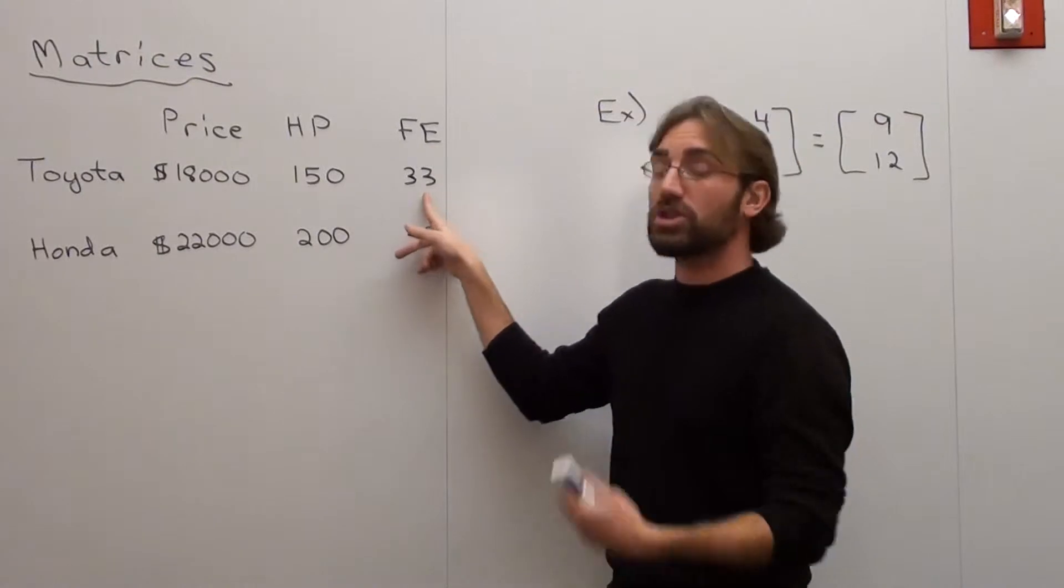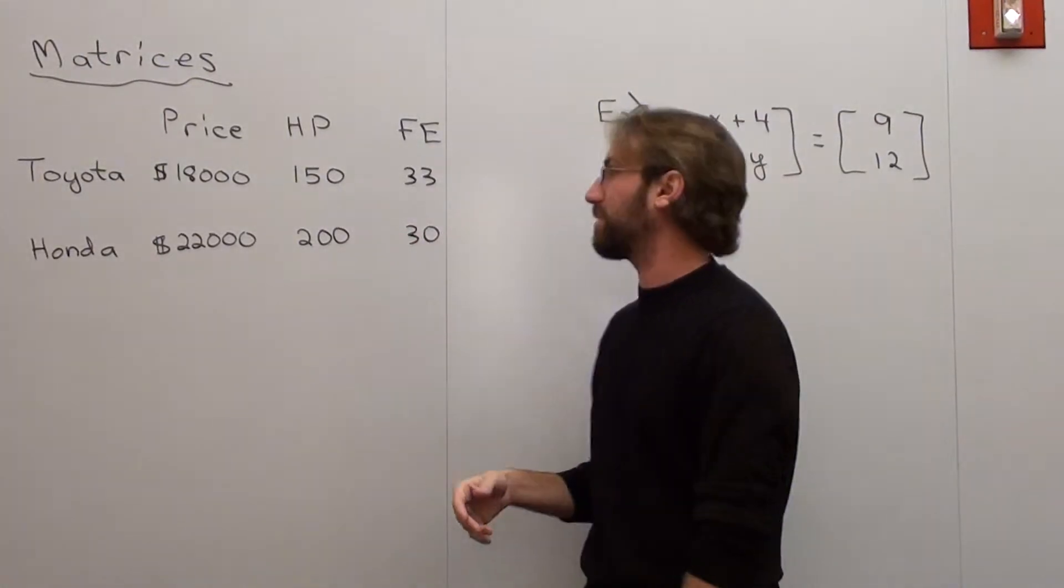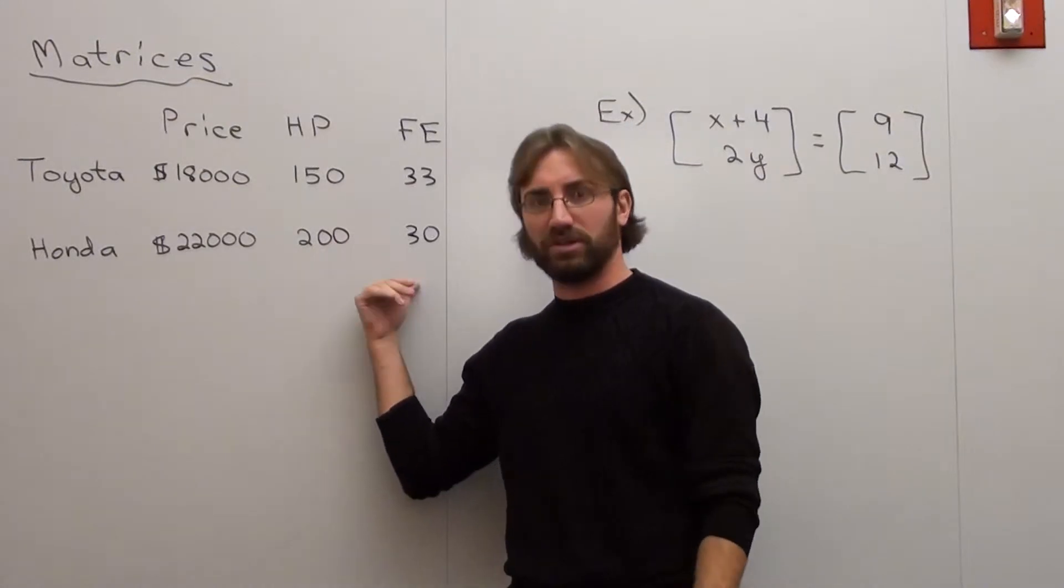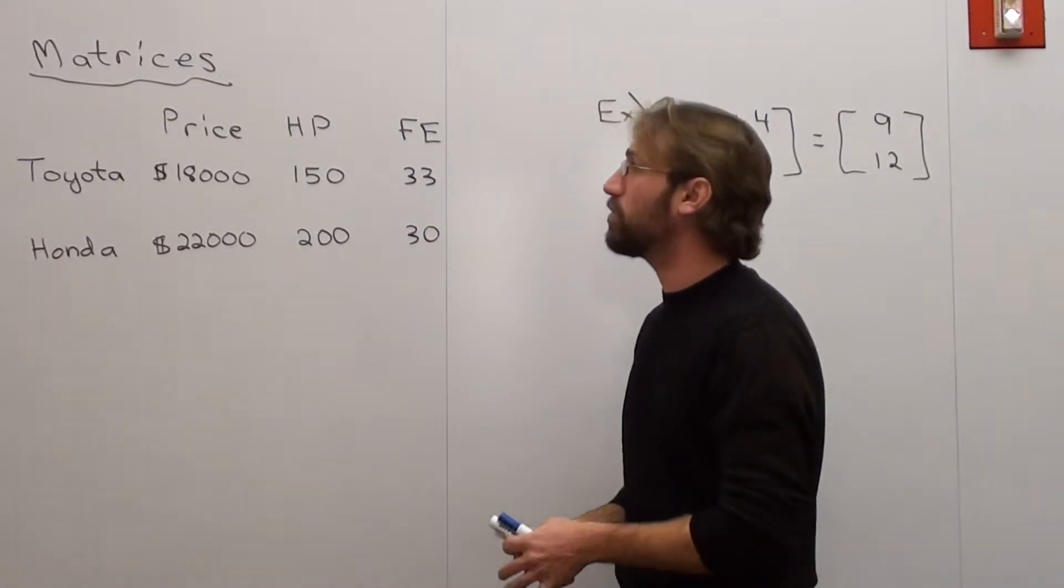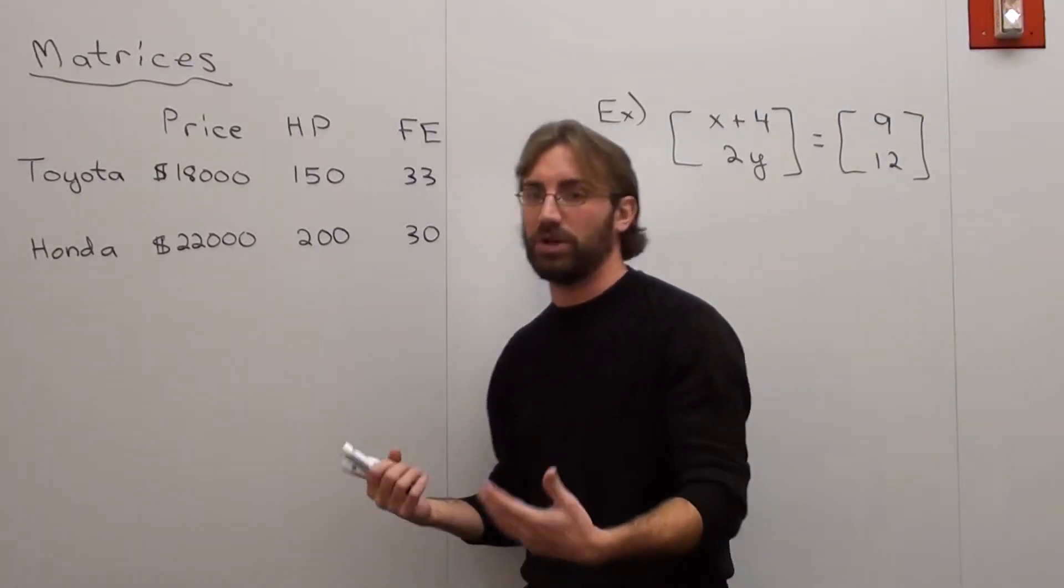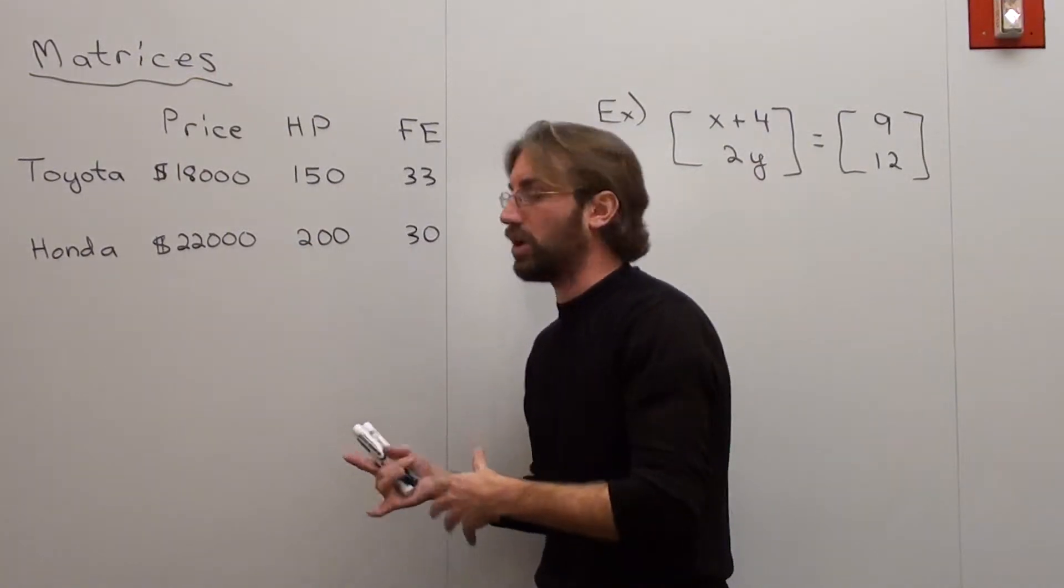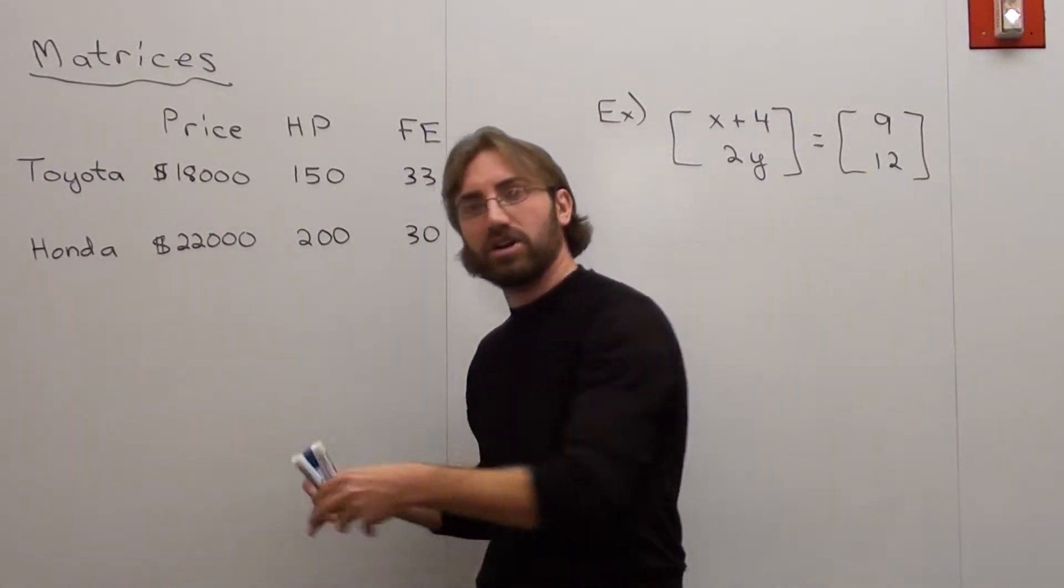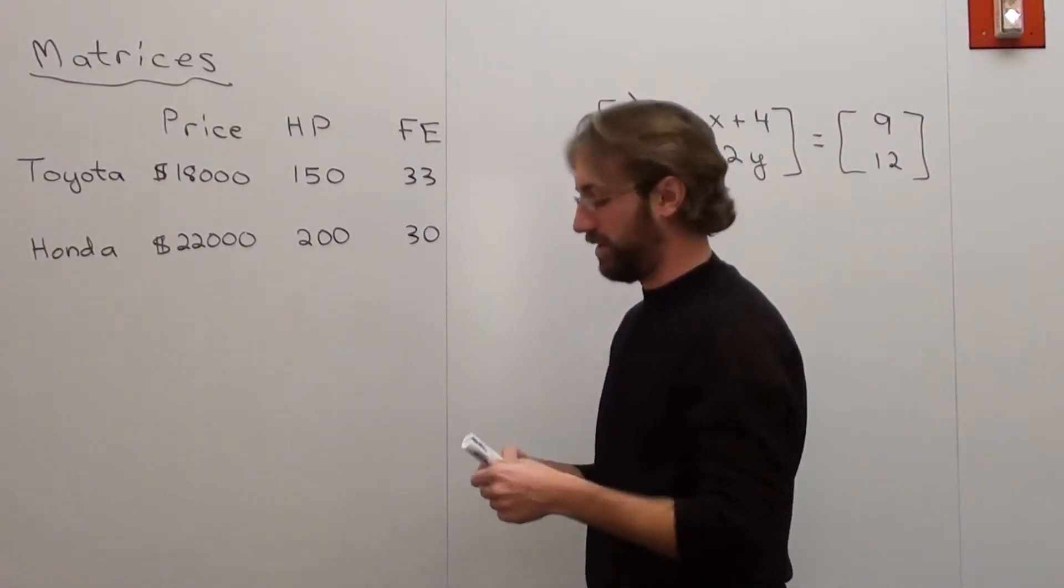And the fuel economy, this one is 33 miles per gallon and this one comes out to 30 miles per gallon, which is actually pretty typical. When you have a car of higher horsepower, you generally tend to sacrifice fuel economy and vice versa. And what you want to do is make an informed decision about what you're going to buy. Now you can actually put up more than these two cars. You can put up eight or nine cars and compare them very easily. And you can do that in matrix format and I'll show you how you do that.